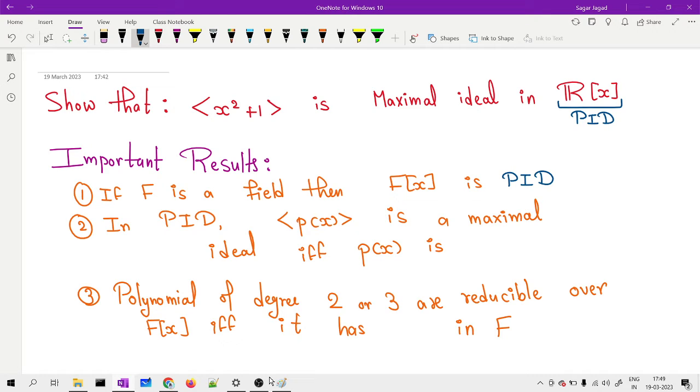The next important result: in PID, since it is a PID, every ideal is generated by some polynomial. In PID, if our ideal is generated by p(x), it is going to be a maximal ideal if and only if your particular polynomial p(x), the generating polynomial, is an irreducible polynomial.